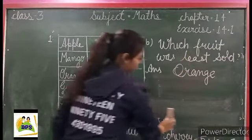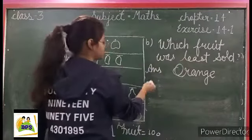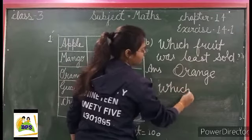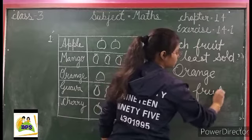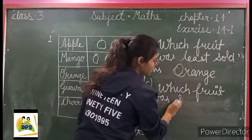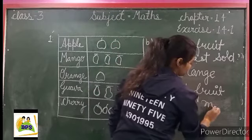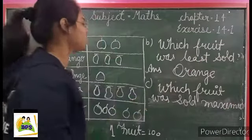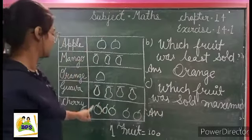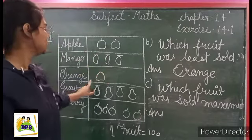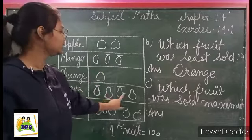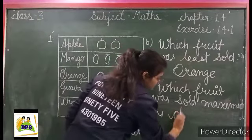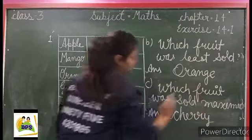Third question: which fruit was sold maximum? Which fruit was sold maximum? Counting: apple one, two. Mango one, two, three. Orange is one. Guava: one, two, three, four. Cherry: one, two, three, four, five. Which one? Cherry. Answer is cherry.